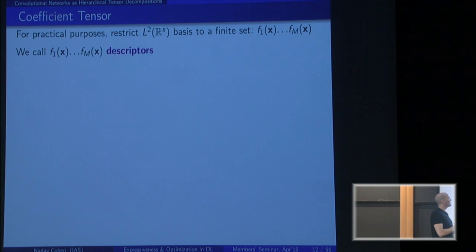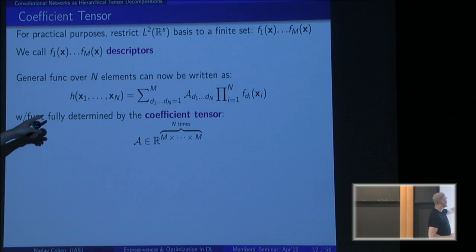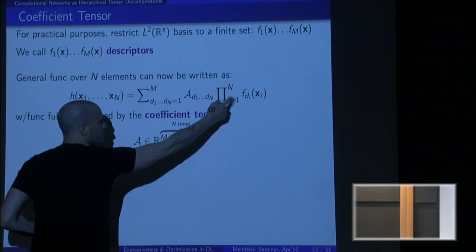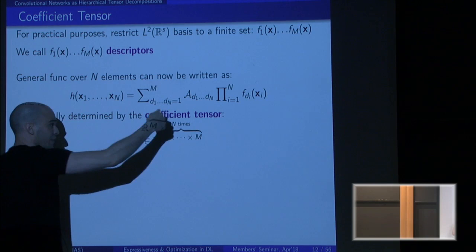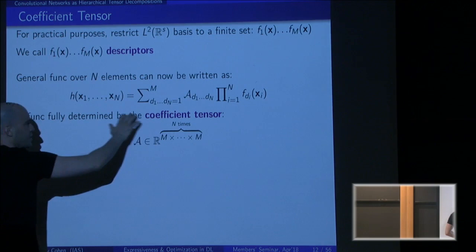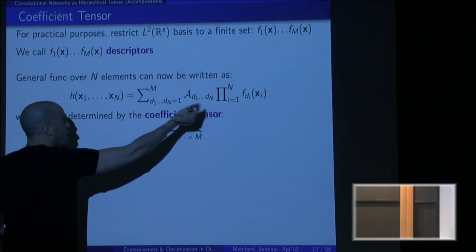For practical purposes, we assume we can restrict functions over pixels to a finite-dimensional subspace — say 100 or 200 functions, called descriptors, that span all functions of interest over pixels. Given this assumption, functions over images can be written as a linear combination of product functions — there are m-to-the-n possibilities, where m is the number of descriptors and n is the number of pixels. The coefficients can naturally be thought of as a tensor with n indices each going from 1 to m.